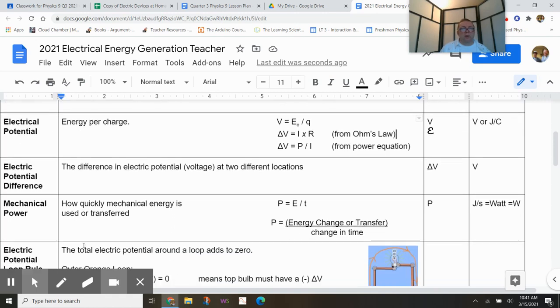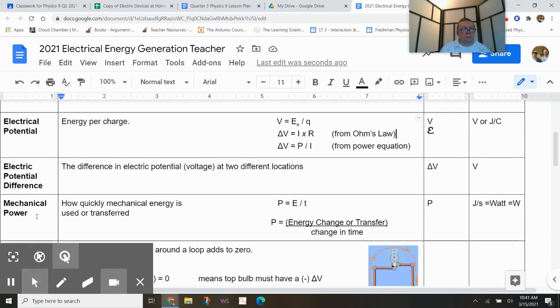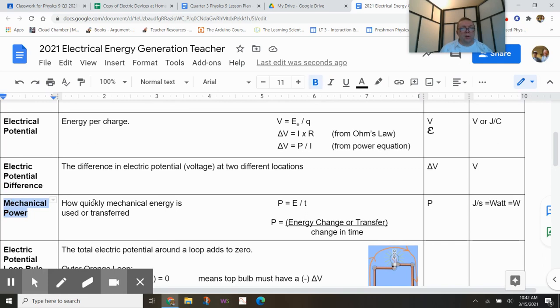Then mechanical power. Mechanical power is how quickly mechanical energy, like gravitational energy, kinetic energy, those sorts of push and pull sorts of things where you think about maybe physically grabbing something. Mechanical power is how quickly mechanical energy ends up getting used.